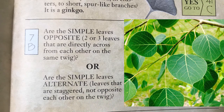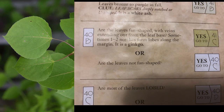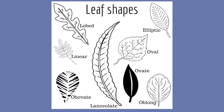7B is about the stem. How are these leaves attached to their stem? If you answered 40B, you're correct. Read the descriptions and see which one best fits your leaf. Since the leaves are not fan shaped, go to 40C. The next box describes lobes — lobes are when a leaf edge goes in and out. Examples are oak and maple.